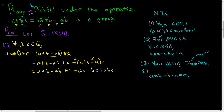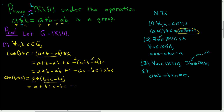Now we compute a star (b star c), and this should equal what we already have. We first compute what's in parentheses: b star c means we add b and c and subtract the product. Then we add a to this and subtract the product. So that's a plus b plus c minus bc, and then subtract a times (b plus c minus bc). Distributing the a very carefully, we get a plus b plus c minus bc minus ab minus ac plus abc.